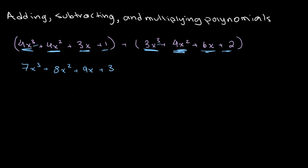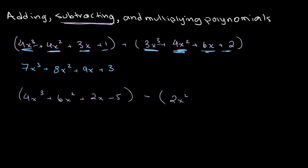When we're subtracting polynomials, we take a very similar approach. Let's say that we have the example 4x cubed plus 6x squared plus 2x minus 5, and we want to subtract the polynomial 2x cubed plus 4x squared minus 6x plus 3.